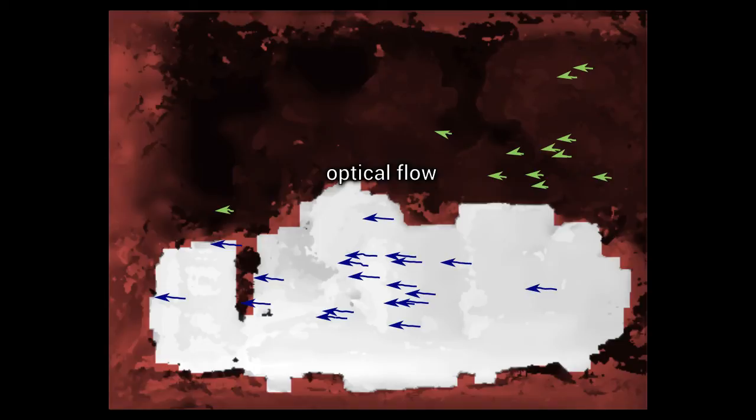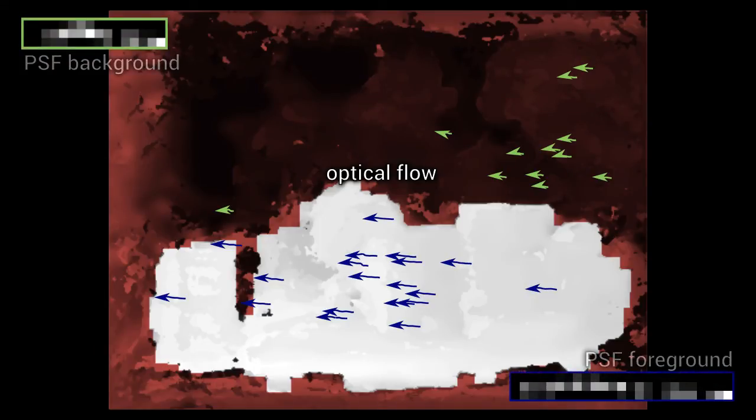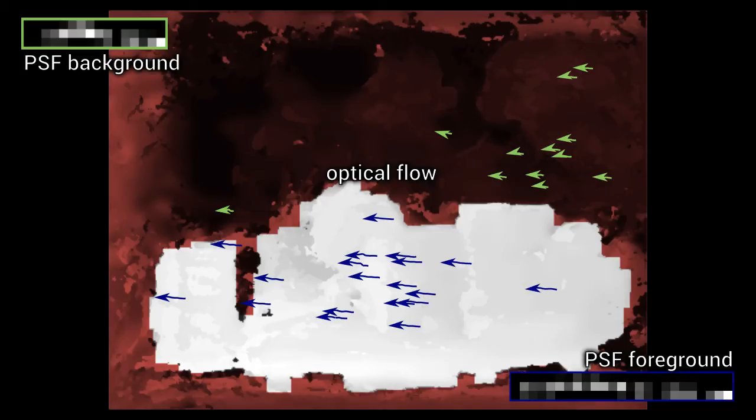This composite depth map is used for clustering local point spread functions. For each depth layer, we track 3D feature points in all exposure images. Tracking these features allows us to determine the local point spread function that causes motion blur in all exposures.